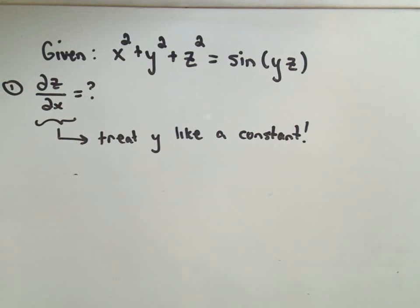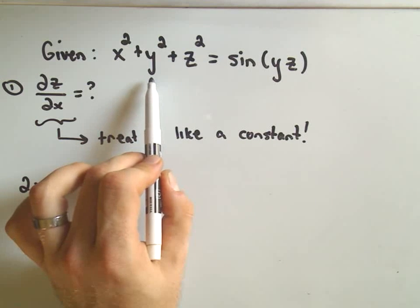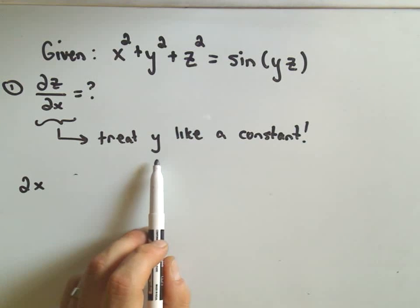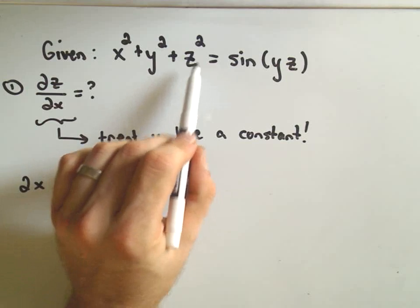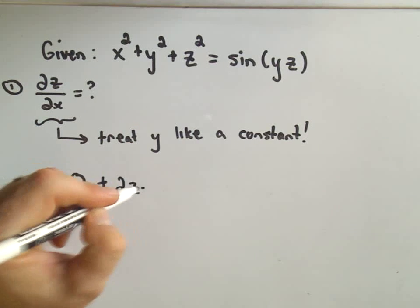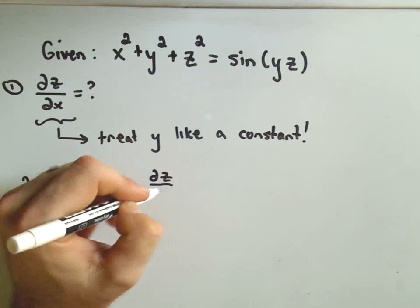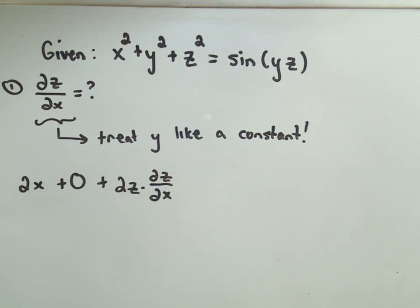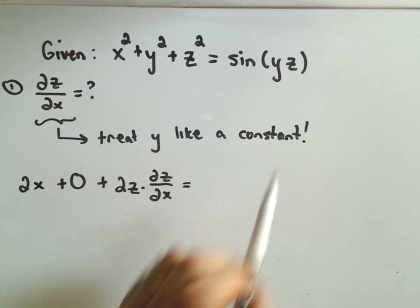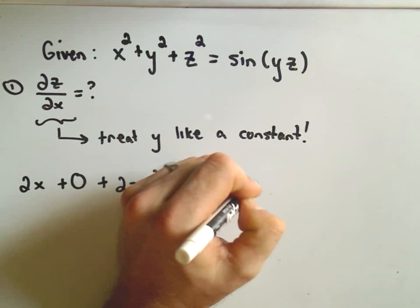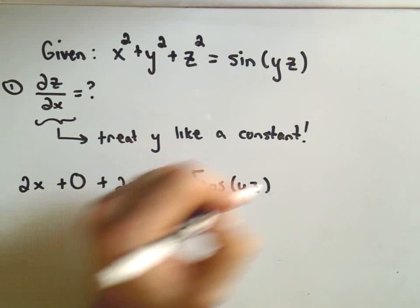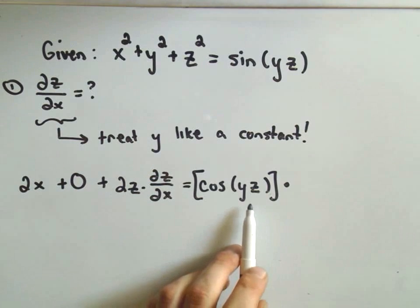Okay, so if I take the derivative of x², I'm simply going to get 2x. Well, the derivative of y², again, I'm treating y like a constant. So y² is a constant. So the derivative of that is simply 0. The z part is where we'll be a little careful. So the derivative of z² would be 2z. But this is where we have to tack on the partial of z with respect to x, because that's what we're taking the derivative with respect to. Now on the right side, we'll have to use the chain rule. So the derivative of sine is cosine. We leave the inside part alone. But now we have to multiply by the derivative of the inside part.